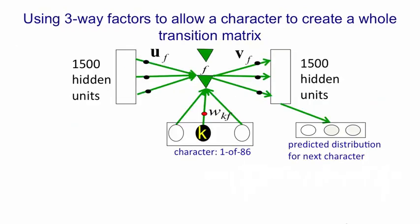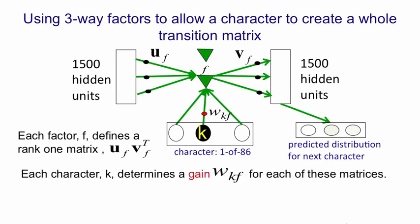So here's a picture of the whole system. We have a number of factors, in fact we'll have about 1500 factors, and the character input is different in that only one of those is active, so there'll only be one relevant weight at a time. And that weight from the current character K, which is called W_KF, is the gain that's used on the rank 1 matrix got by taking the outer product of U and V. So the character determines a gain, W_KF, you multiply the rank 1 matrix, UV, by that gain. You add together those scaled matrices for all the different factors, and that's your transition matrix.